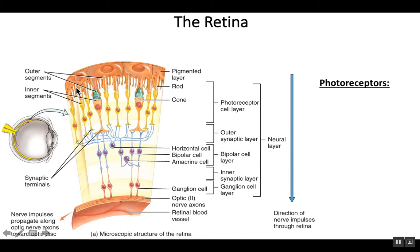There's another layer in the deepest part of the retina known as the pigmented layer. These are not neurons; instead, they help to absorb any scattered light and they support and protect the photoreceptor cells.